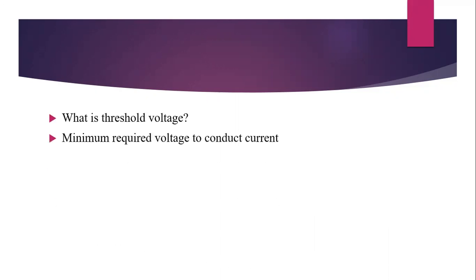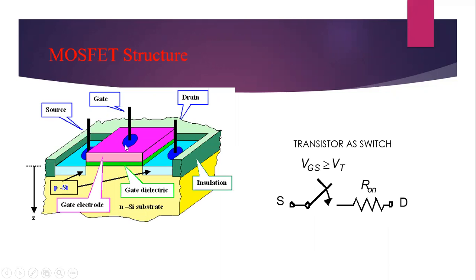The threshold voltage is the minimum voltage required to conduct a current. These are the two important concepts in the working principle of MOSFET. The MOSFET structure is a four-terminal device: source, drain, and gate. The gate and substrate structure acts as a parallel plate capacitor — the gate is one conducting plate and the substrate is the other, separated by dielectric material SiO2. So this structure acts as a parallel plate capacitor.